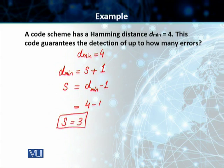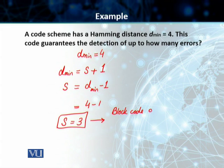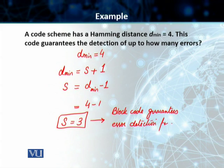So students, if you have a block code that has a minimum Hamming distance of 4, it means that this block code guarantees error detection for up to 3 bits in a codeword.